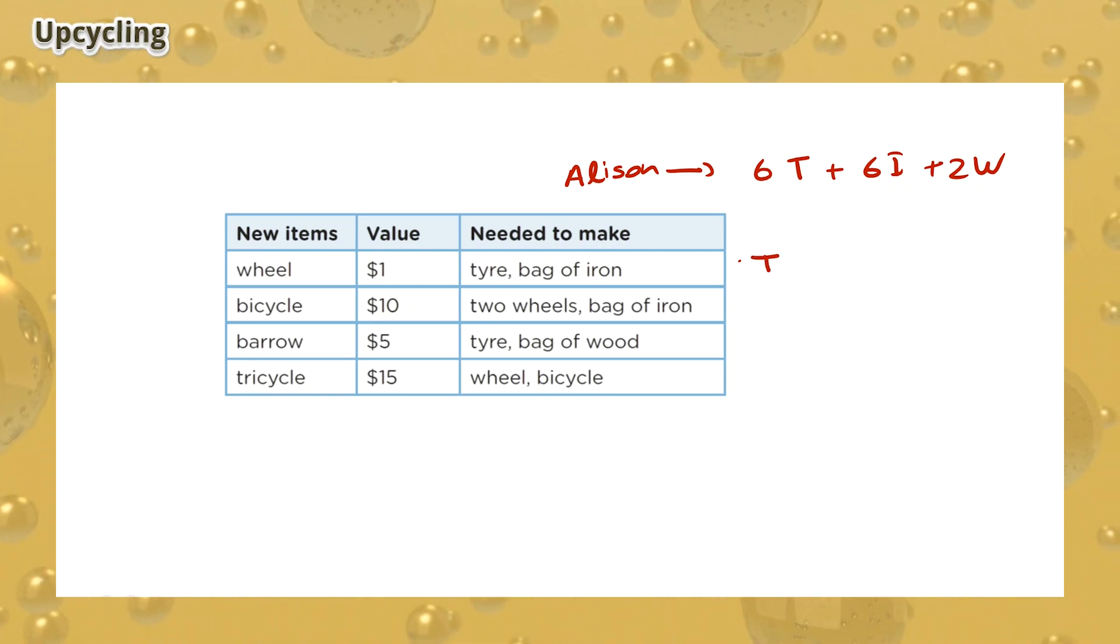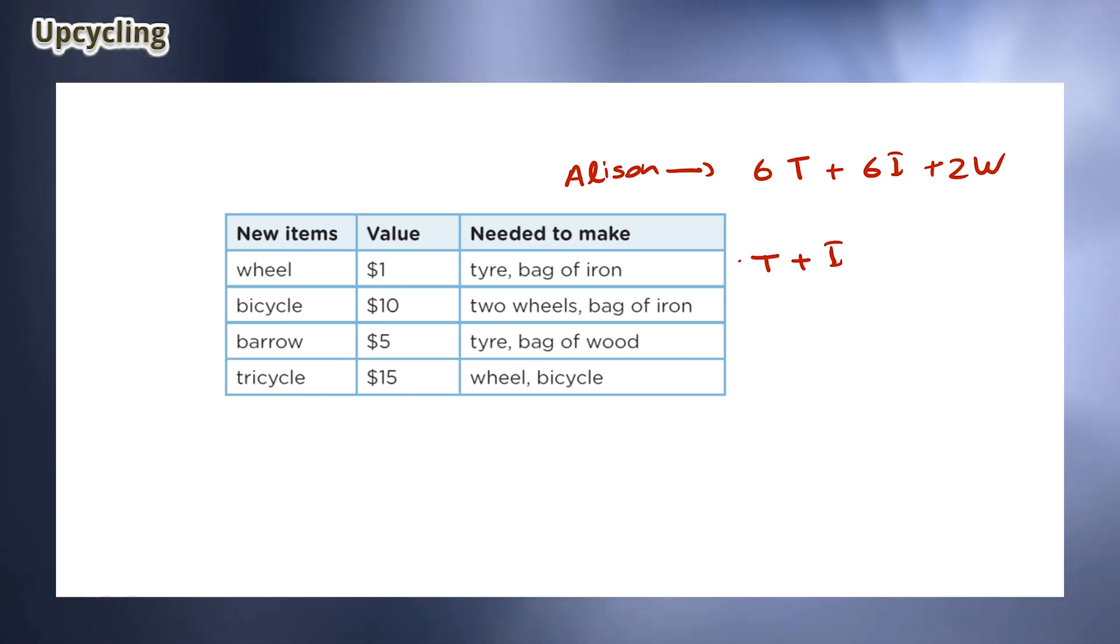To build a wheel, you will need a tire and a bag of iron. To build a bicycle, you will need two tires and three bags of iron. To make a barrel, you will need a tire and a bag of wood. And to make a tricycle, you will need three tires and four bags of iron.